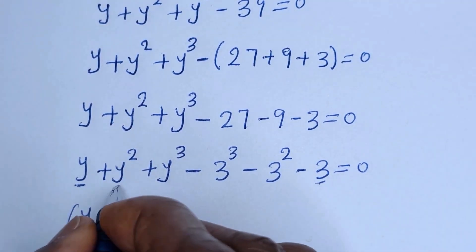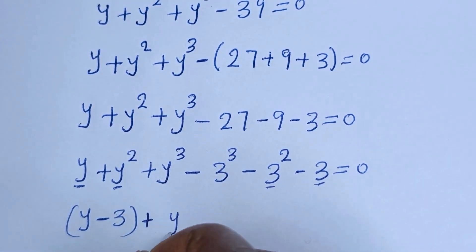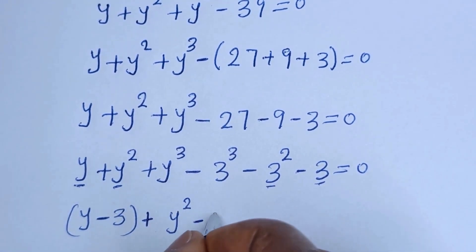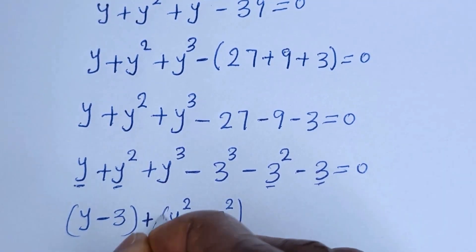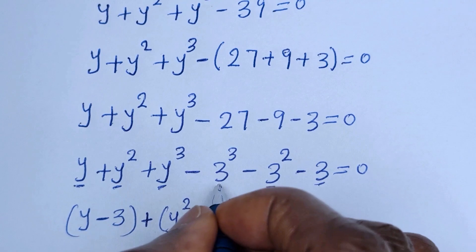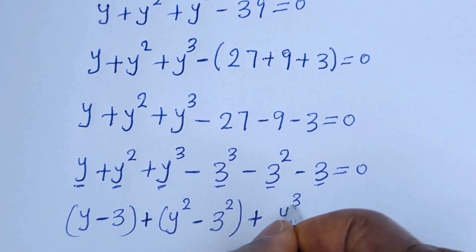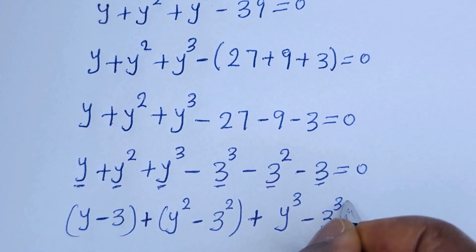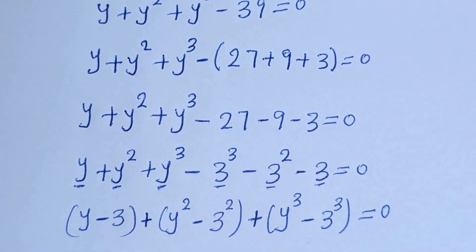Let's pair the terms together: we have y minus 3 bracket, plus y squared minus 3 squared bracket, plus y raised to power 3 minus 3 raised to power 3, is equal to 0.